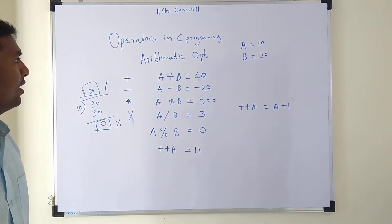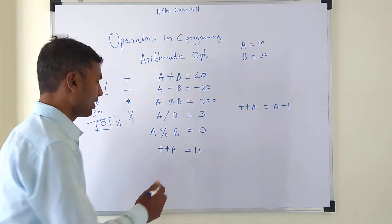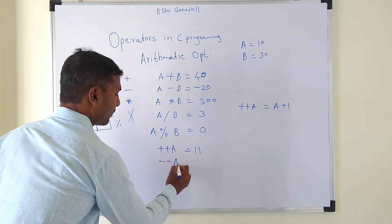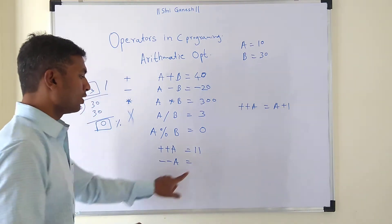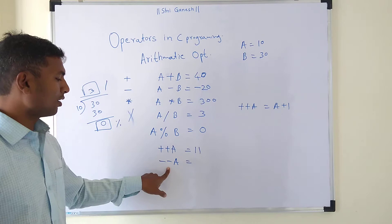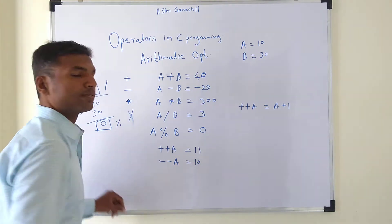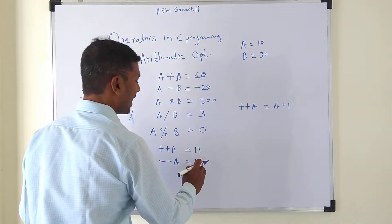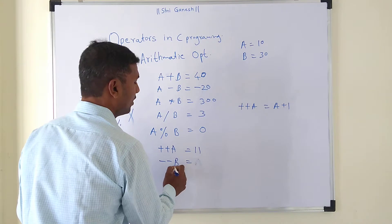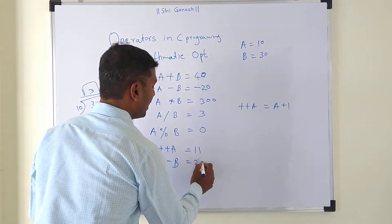The last operator is called the minus minus operator, also known as the decrement operator. So if we write minus minus a, and the present value of a is 11, when we use minus minus it will become 10 again. Similarly, if we write minus minus b, and b's value is 30, then it will become 29.